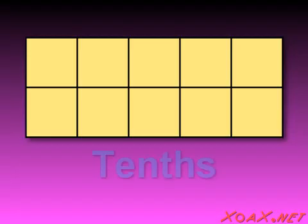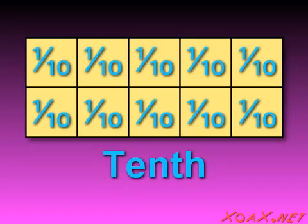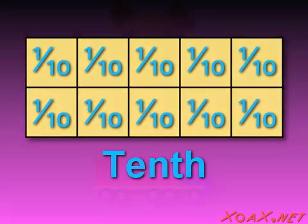Finally, we take this rectangle and divide it into ten equal but smaller squares like this. This divides the rectangle into tenths, since each little square has one-tenth of the area of the original rectangle.